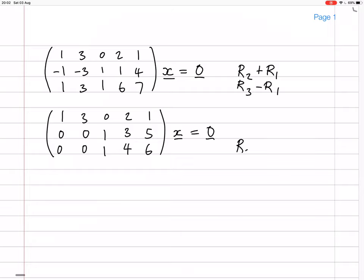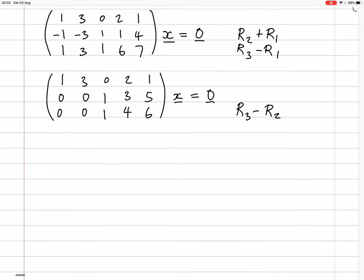Now let's do row 3 minus row 2. Rows 1 and 2 stay the same: 1, 3, 0, 2, 1 and 0, 0, 1, 3, 5. Row 3 becomes 0, 0, 0, 1, 1. x equals 0.